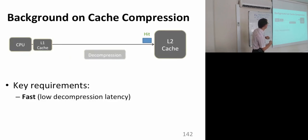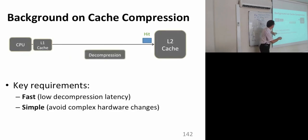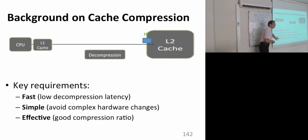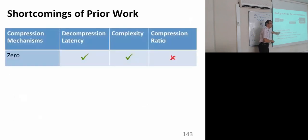There are three key requirements in compression. First, compression needs to be fast. Second, it needs to be a simple mechanism so that we avoid complex hardware changes. Third, it needs to be effective — we need to get good compression ratio. Designing a good compression algorithm is a trade-off between all three of these.